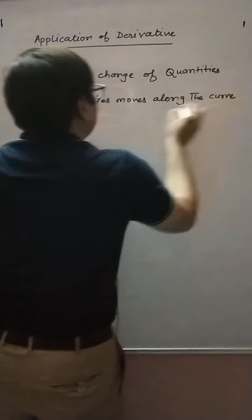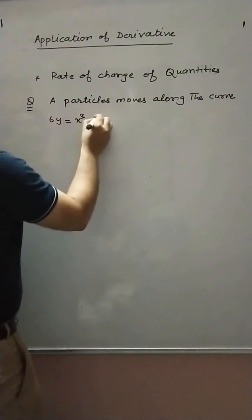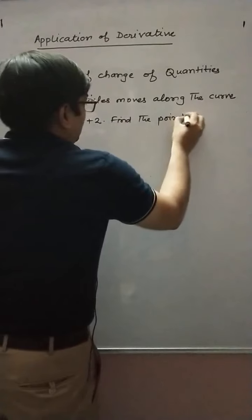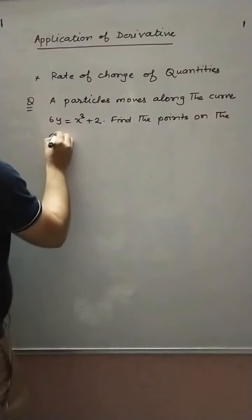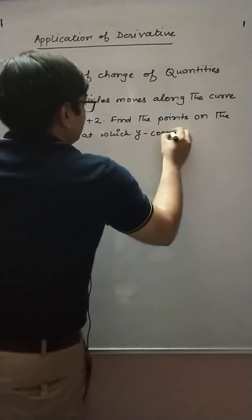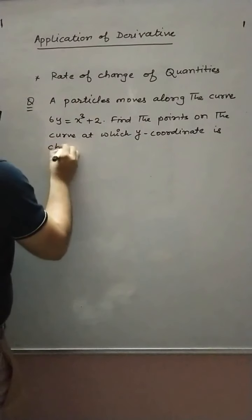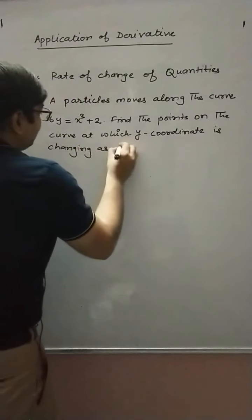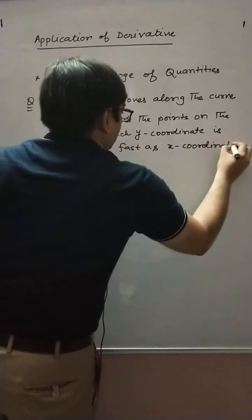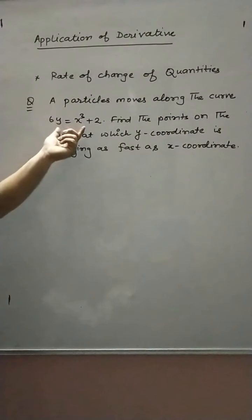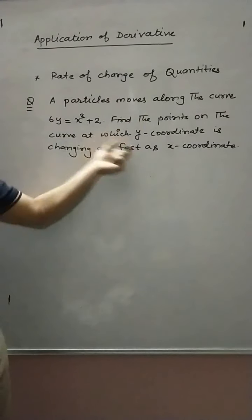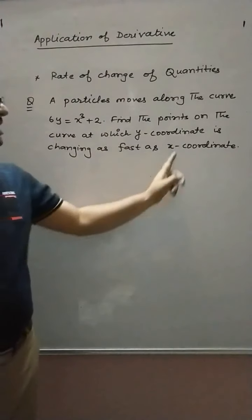First question: a particle moves along the curve 6y = x³ + 2. Find the points on the curve at which the y-coordinate is changing as fast as the x-coordinate.